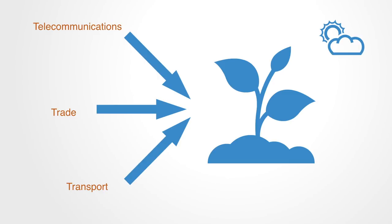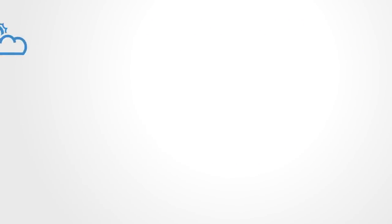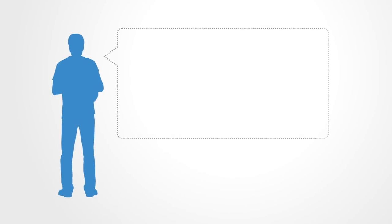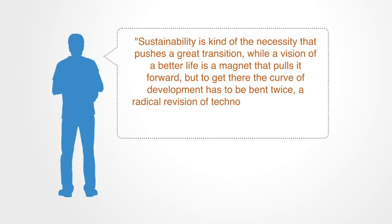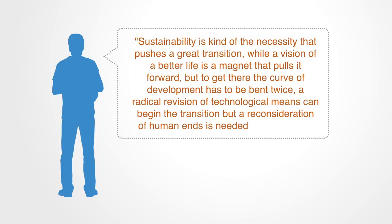Paul Raskin, who writes about the Great Transition, also talks about this in a similar fashion. Sustainability is kind of the necessity that pushes a great transition, while a vision of a better life is a magnet that pulls it forward. But to get there, the curve of development has to be bent twice. A radical revision of technological means can begin the transition, but a reconsideration of human ends is needed to complete it.